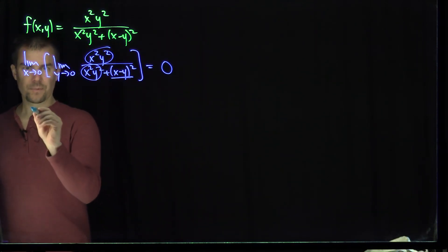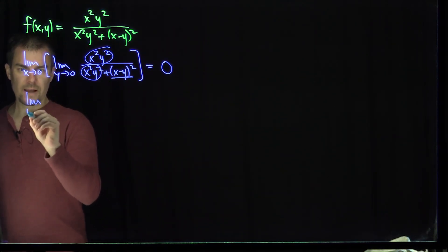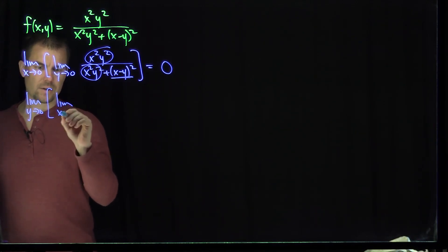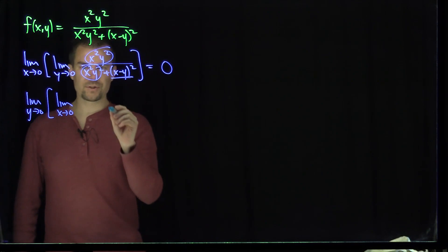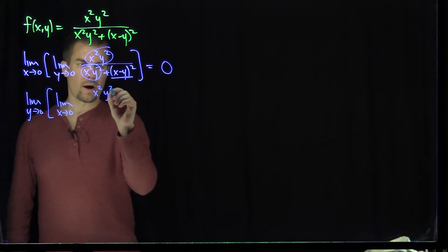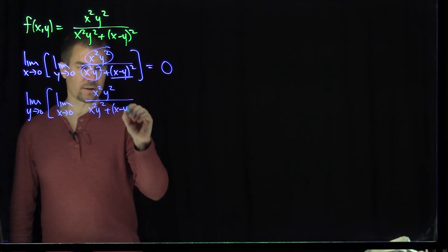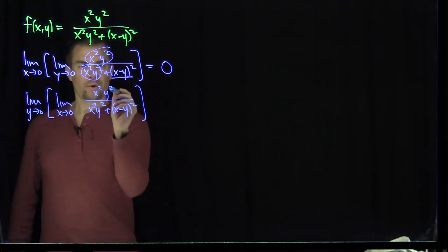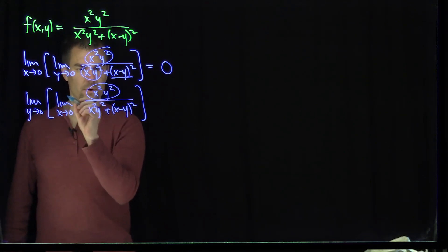Let's see what happens when x goes to zero first. If we do the limit as y goes to zero, and then the limit as x goes to zero of this expression, we have x squared y squared over x squared y squared plus x minus y squared. We see as x goes to zero, what we'll get is the numerator, that term will go to zero there,